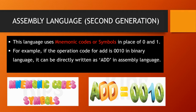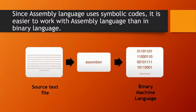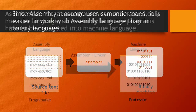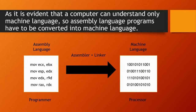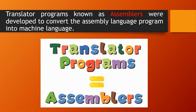Assembly language uses mnemonic codes or symbols in place of zeros and ones. For example, if the operation code for ADD is 0010 in binary language, it can be directly written as ADD in assembly language. Since assembly language uses symbolic codes, it is easier to work with than binary language. A computer understands only machine language, so assembly language programs have to be converted into machine language by a translator program known as the assembler.